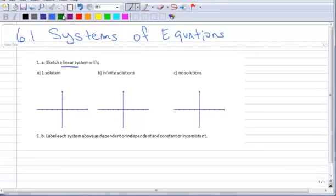What I want to do is sketch a linear system that has one solution. We're just sketching here. So here's one linear line, linear equation. Here's another one. You can see that they intersect in one spot. So there's some x and some y that is the intersection. We call that the solution to the system.